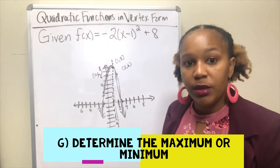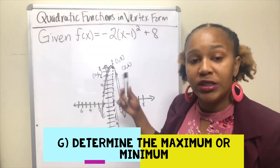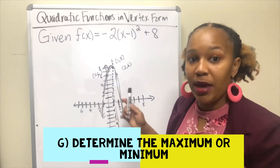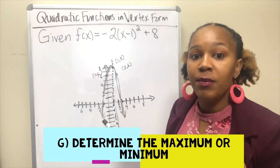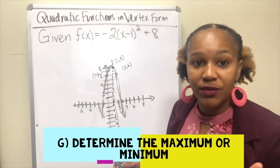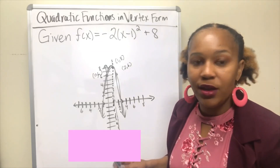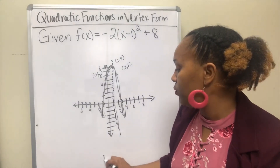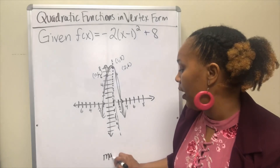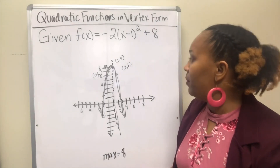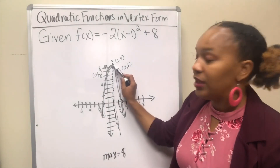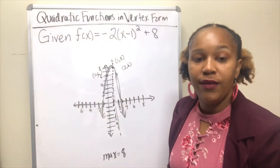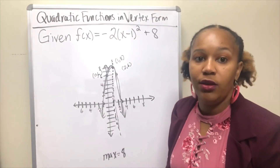For part g, we determine whether there is a maximum or a minimum. Since the parabola opens downward, this graph has a maximum. The maximum is the y-value of the vertex — don't forget it's the y-value — so the maximum is 8. That is the biggest y-value on the graph.